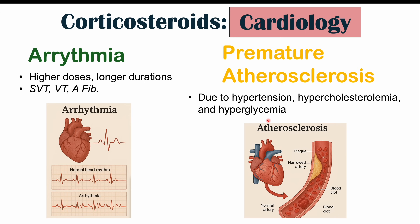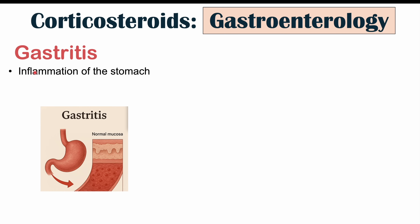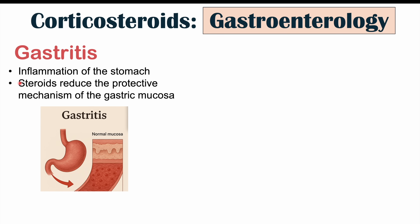Atherosclerosis involves plaque formation in the blood vessels, especially those of the heart. Moving on to the gastrointestinal system, we can see gastritis — inflammation of the stomach. Steroids cause this by reducing the protective mechanisms of the gastric mucosa. The gastric mucosa has important protective mechanisms against the stomach's acidic contents, but corticosteroids — like NSAIDs — can impair that protection, making the acidic gastric contents more likely to damage the underlying mucosa, leading to gastritis.